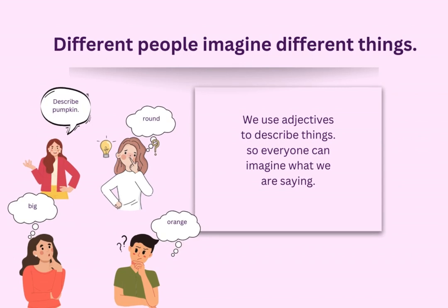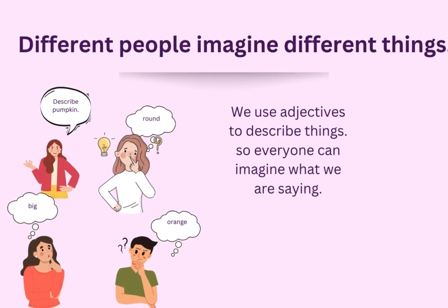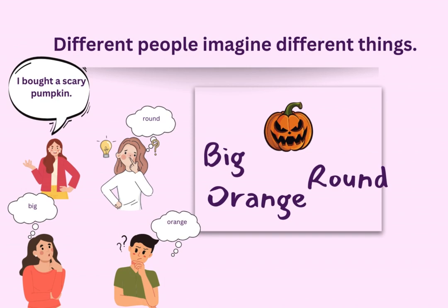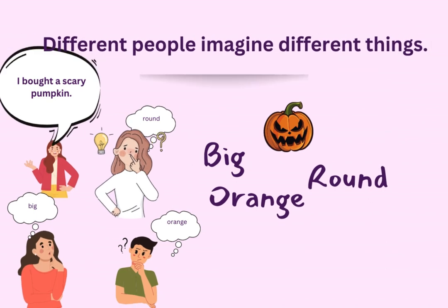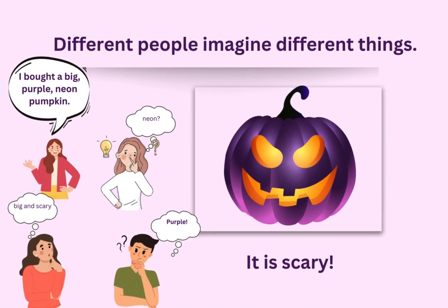Different people imagine different things in their mind. We use adjectives so everyone can imagine what we are talking about. If I say 'pumpkin,' people might have a different image in their mind. If I say 'I bought a scary pumpkin,' you might have a similar image but include a scary face. But if I say 'I bought a big, purple, neon pumpkin — it is scary,' the image starts to take shape into the actual picture.